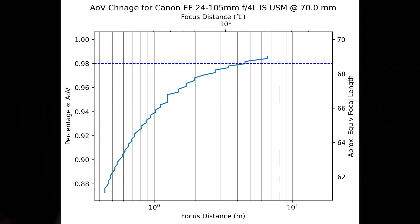At 70mm, the angle of view shift is now up to 12.7% wider, and that 2% threshold on account of the longer focal length and higher amount of breathing has stepped out to 12 feet or 3.5 meters.